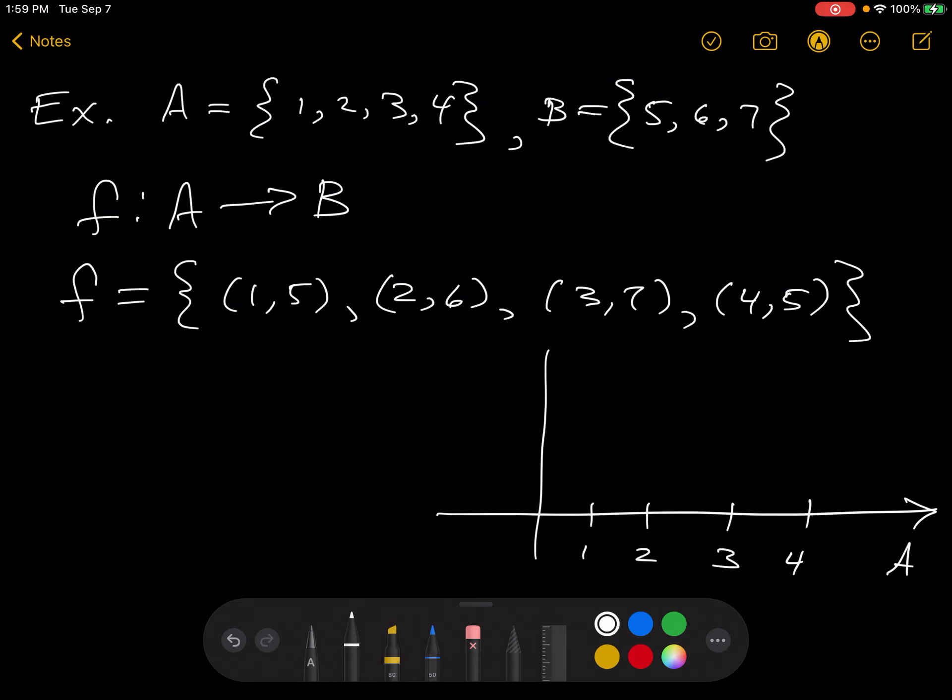This is A along there, B along there. Say 5, 6, 7.